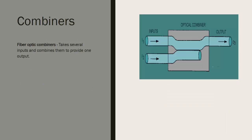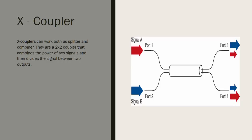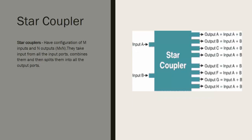Combiners are simply the opposite of splitters — they take several input signals and combine them into one output signal. X couplers can be thought of as a hybrid of combiners and splitters. They take two input signals at the input ports, combine them, and then split them into the output ports. Both output signals receive a combination of the input signals.